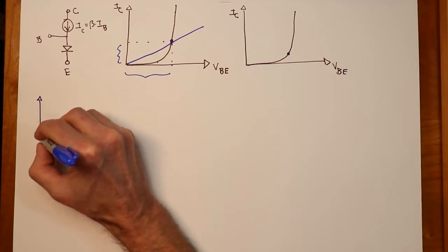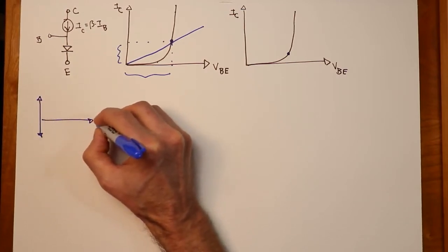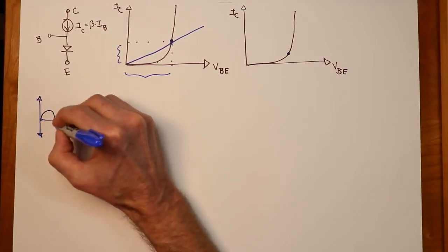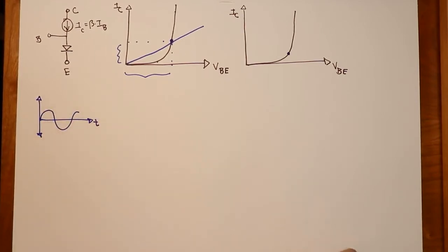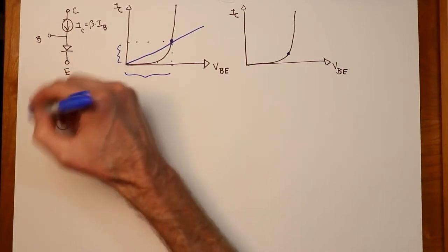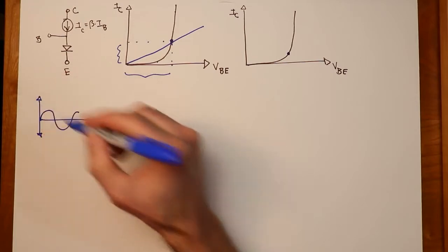this is going to be some kind of sinusoidal kind of thing, very basically. This could be either the base emitter voltage or the base current coming in.